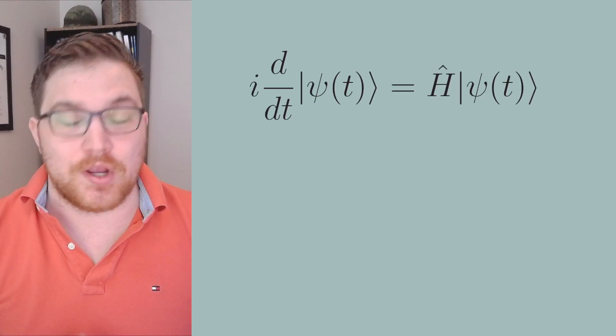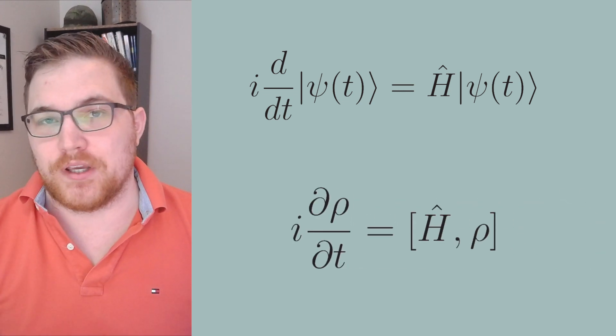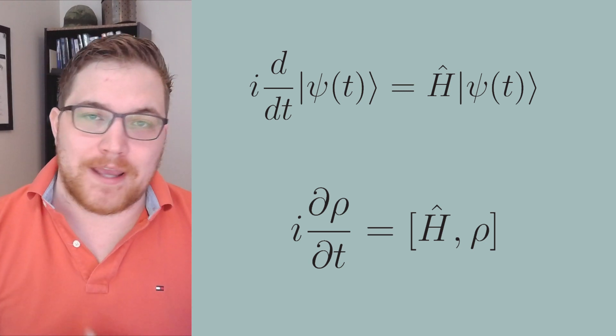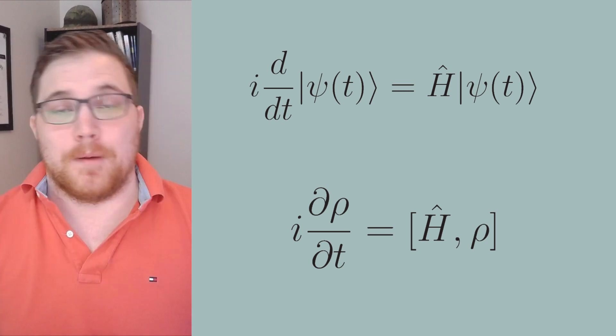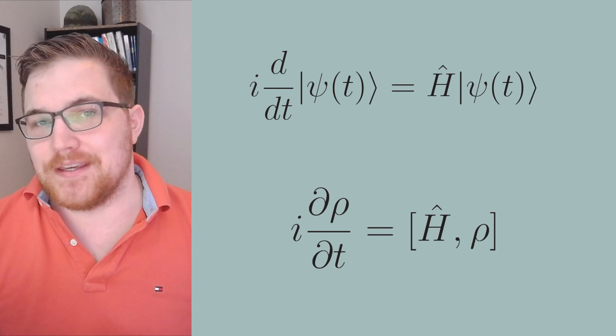In principle, you have the Schrödinger equation for pure states, or more generally, the von Neumann equation if you want to potentially explore mixed states. These equations tell you how to evolve a quantum state in time. But a key ingredient to understand in these equations is the Hamiltonian.